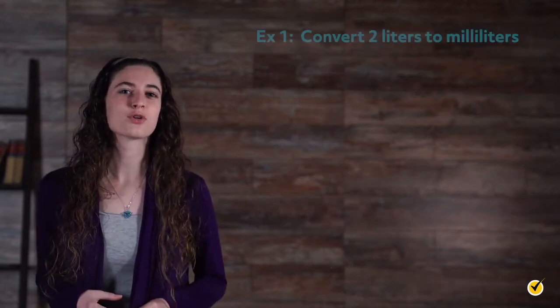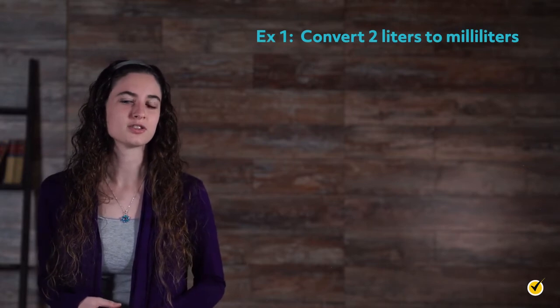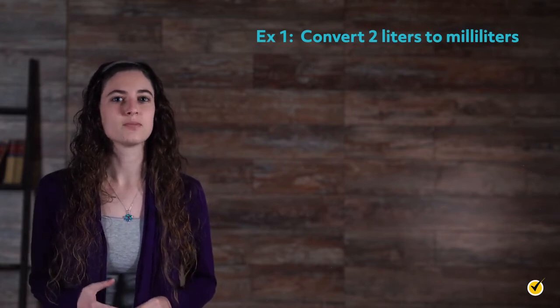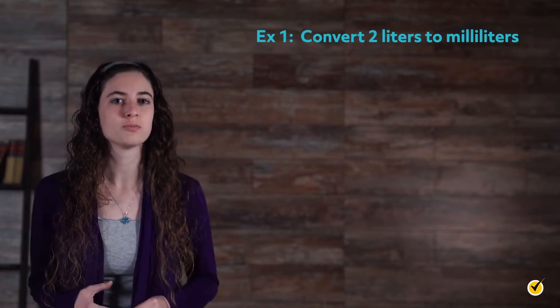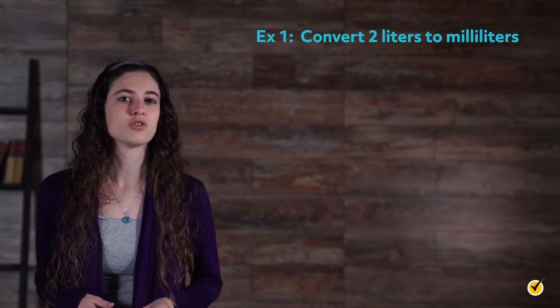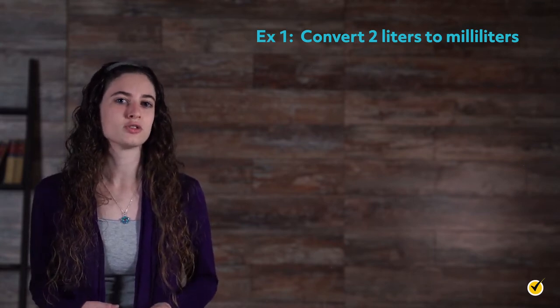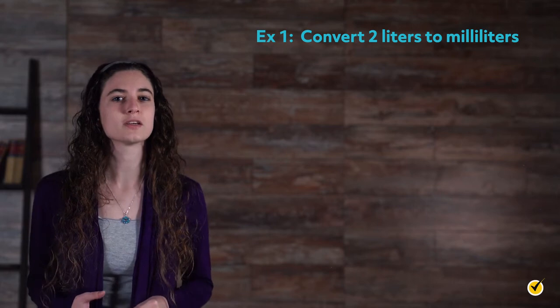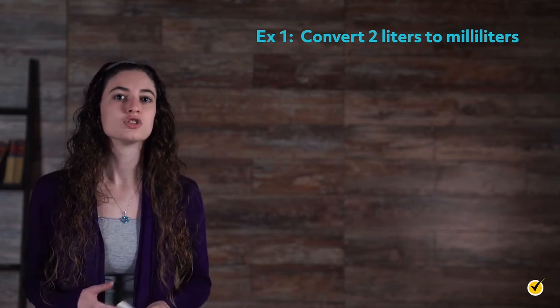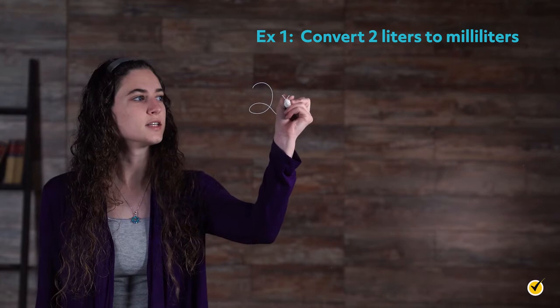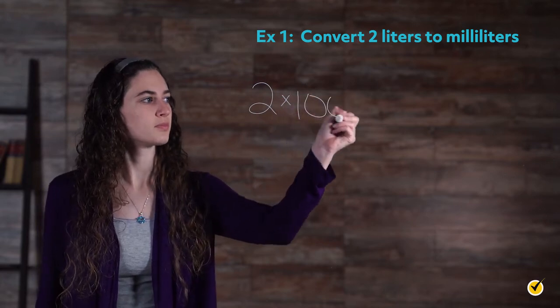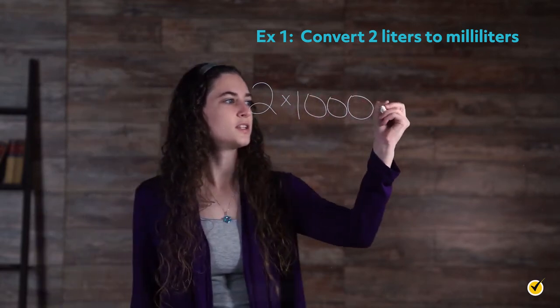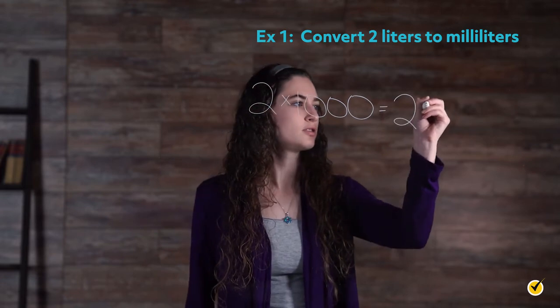In our first example, we're going to convert 2 liters to milliliters. You are being asked to convert the basic measurements of volume to a smaller unit. As a result, the number of milliliters will be a larger number. A liter is 1,000 times larger than a milliliter, so multiply 2 times 1,000 to give you 2,000 milliliters.